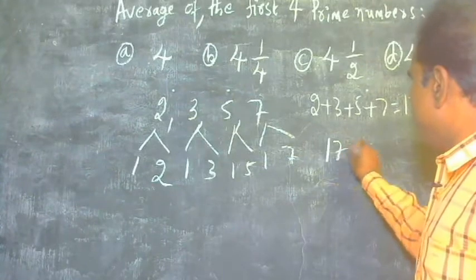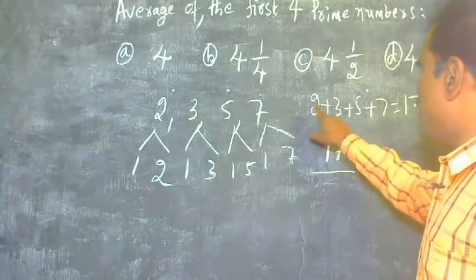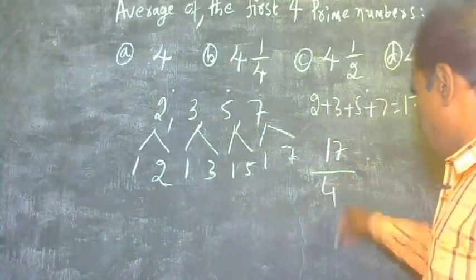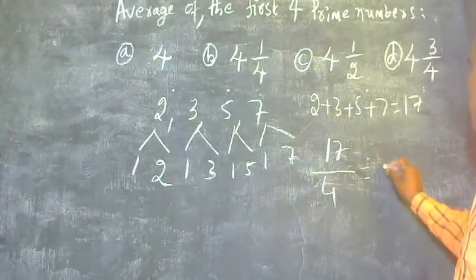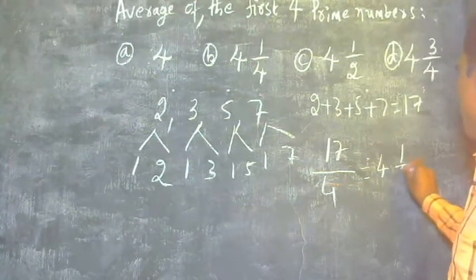Divide the sum by the number of terms: 1, 2, 3, 4. 17 by 4, that is 4, 4 into 16, 4 and 1/4.